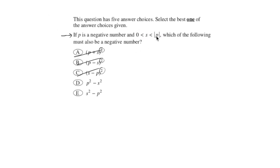Now it's time to try and come up with some numbers that obey the condition given in the problem. I'll write it out here. That 0 is less than s, that is less than the absolute value of p. Now p is a negative number. Let's go with a nice negative number to use. So let's say p is equal to negative 2.